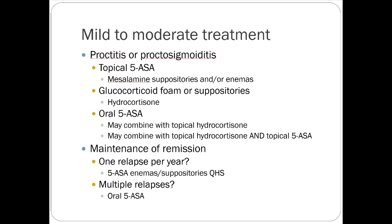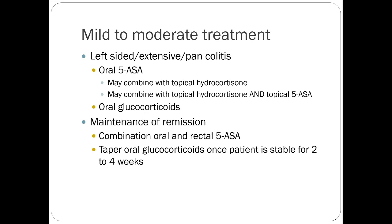For maintenance of remission in UC, if you can get somebody into remission, you're looking at about one relapse per year. People might use a suppository or enema once daily — this is for proctitis or proctosigmoiditis on the distal side. Multiple relapses suggest oral formulations are usually slightly more effective. For left-sided, extensive, or pancolitis, oral formulations are preferred, but you can combine rectal and oral formulations — patients may benefit from the combination.